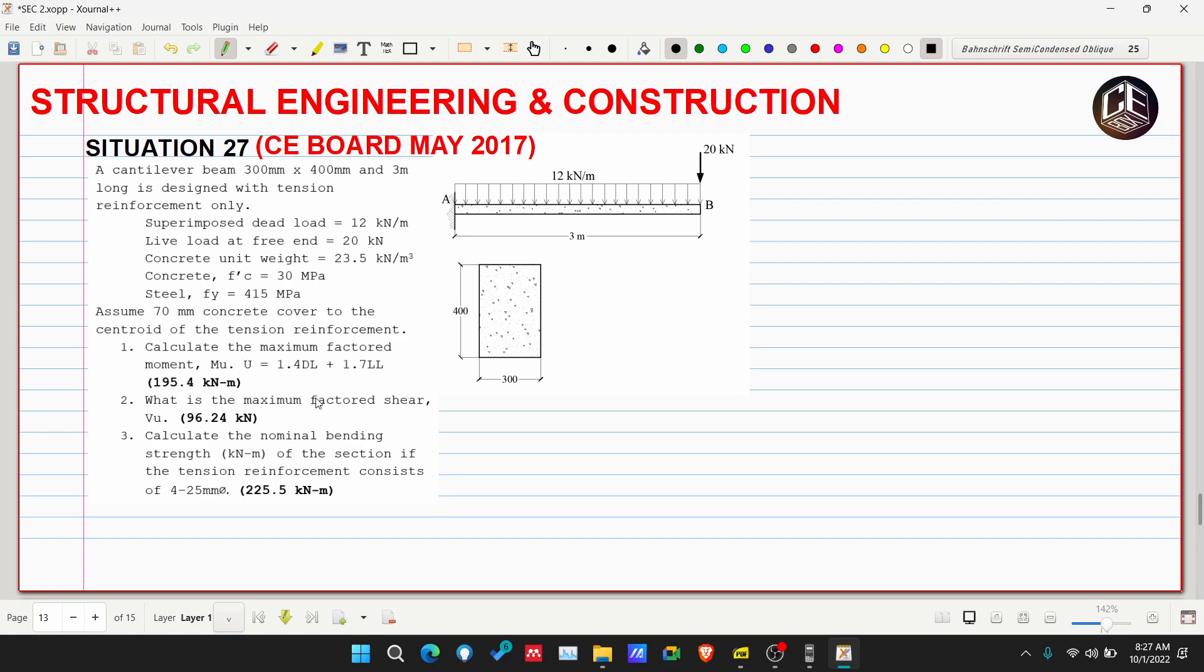So here's our cantilever beam with a superimposed dead load of 12 kilonewtons per meter as distributed load, plus our live load as a point load at point P.